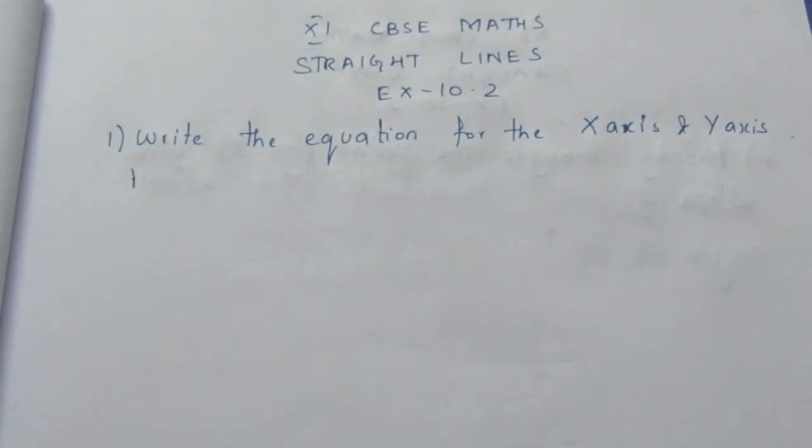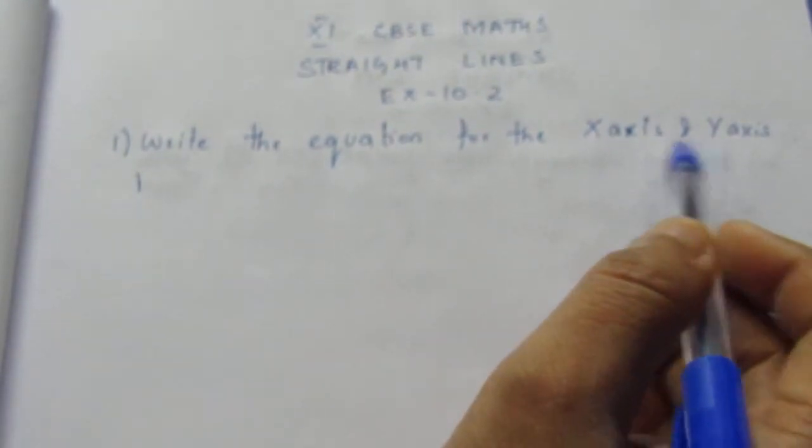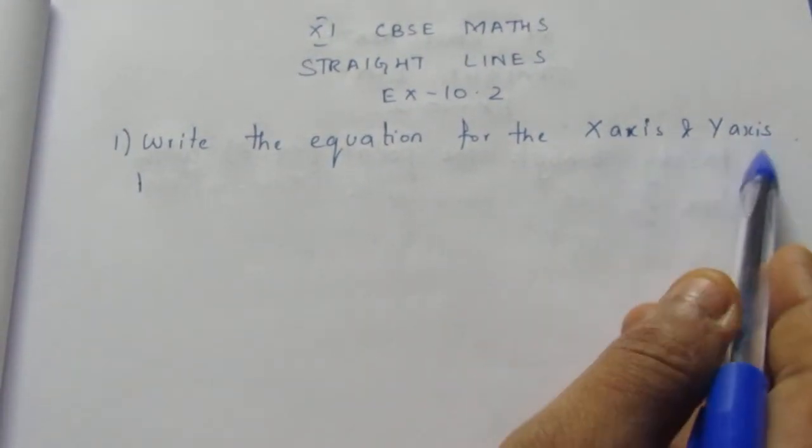Hello viewers, I am Mike Lee. Today we are going to see Class 11 CBSE Maths, straight lines, exercise 10.2, question number 1. Let's see the question: find the equation for the x-axis and the y-axis.